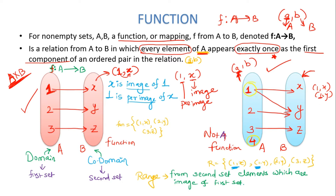Another reason a diagram may fail to be a function: if some element in the first set has no image at all — meaning it has no outgoing arrow — then the whole diagram is not a function, because every element from the first set must have exactly one image.